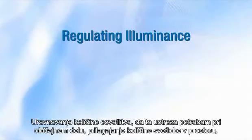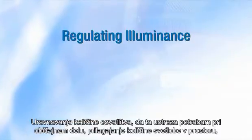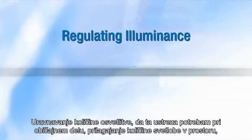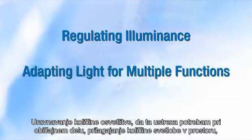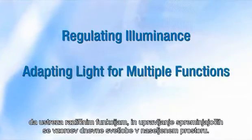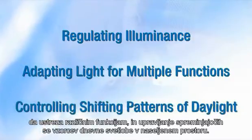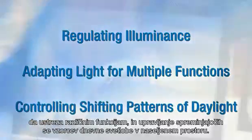There are three basic dimensions of the control task: regulating the amount of illuminance to fit what is needed for normal work, adapting the amount of light in a space to fit multiple functions, and controlling the shifting patterns of daylight in the occupied space.